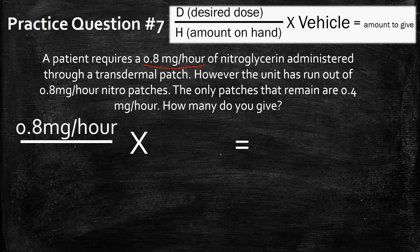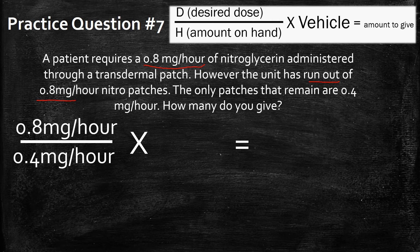Next, the amount on hand. So obviously, they've run out of the normal 0.8 mg patches, and there are only 0.4 mg per hour patches available remaining. So that's going to be your amount on hand. We're going to throw that in right here at the bottom, 0.4 mg.